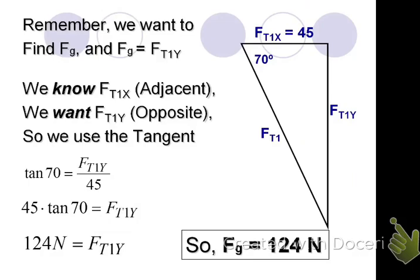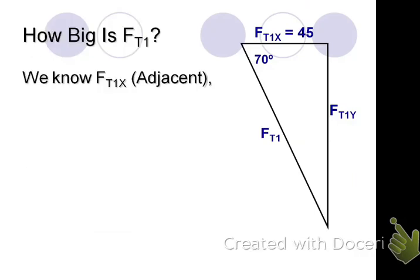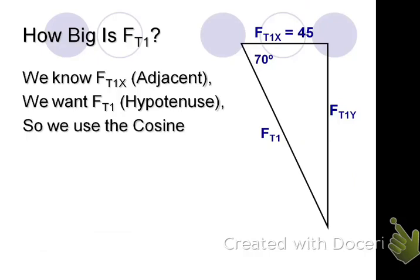Any questions? What if I wanted to find the tension FT1? What would I do? I could use adjacent over hypotenuse. What's that? It's the cosine. So we know the adjacent. We want the hypotenuse. We use the cosine. The cosine of 70 equals the adjacent 45 over the hypotenuse FT1. But here's a little problem.